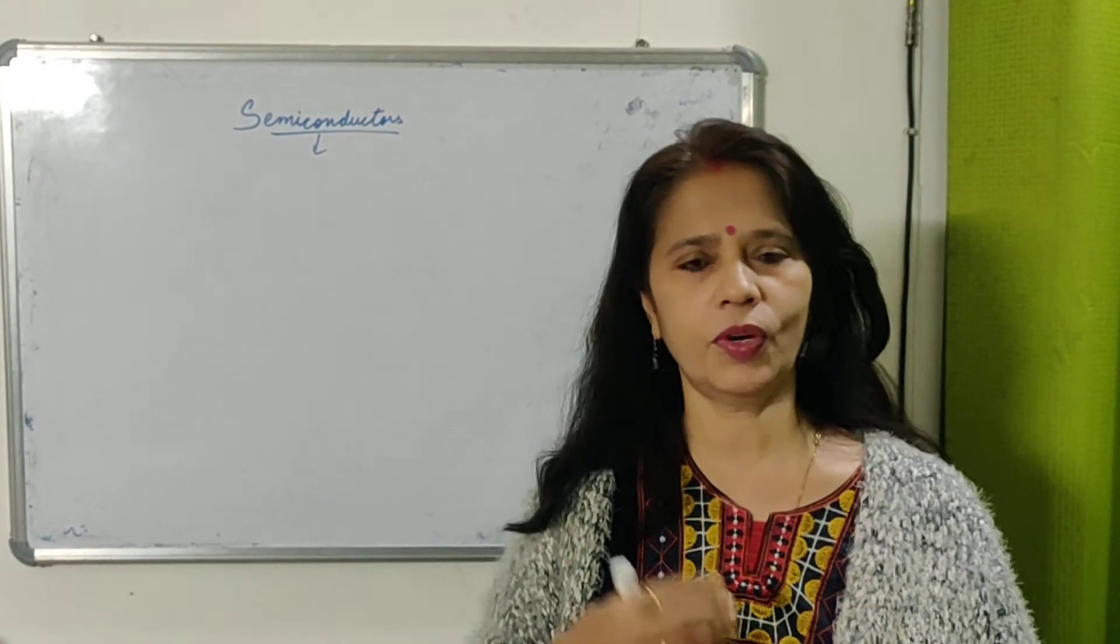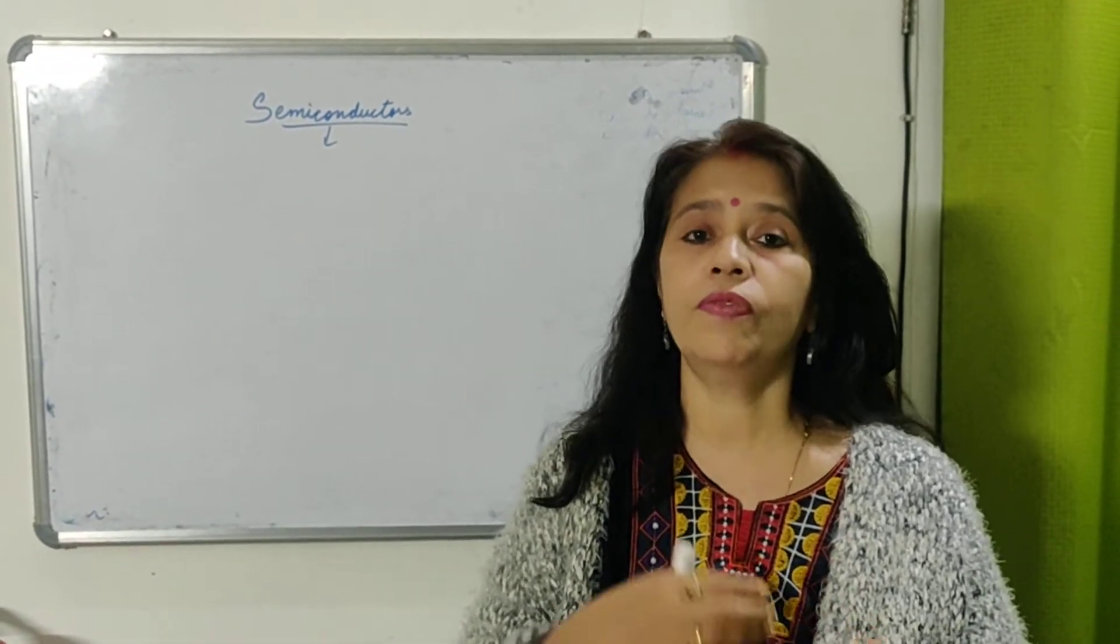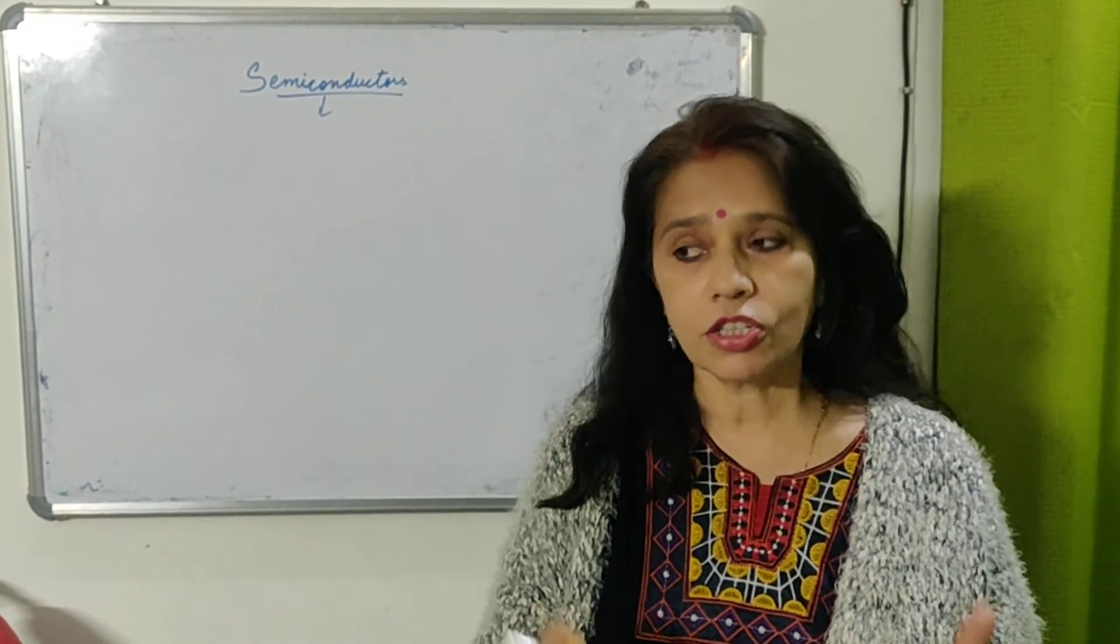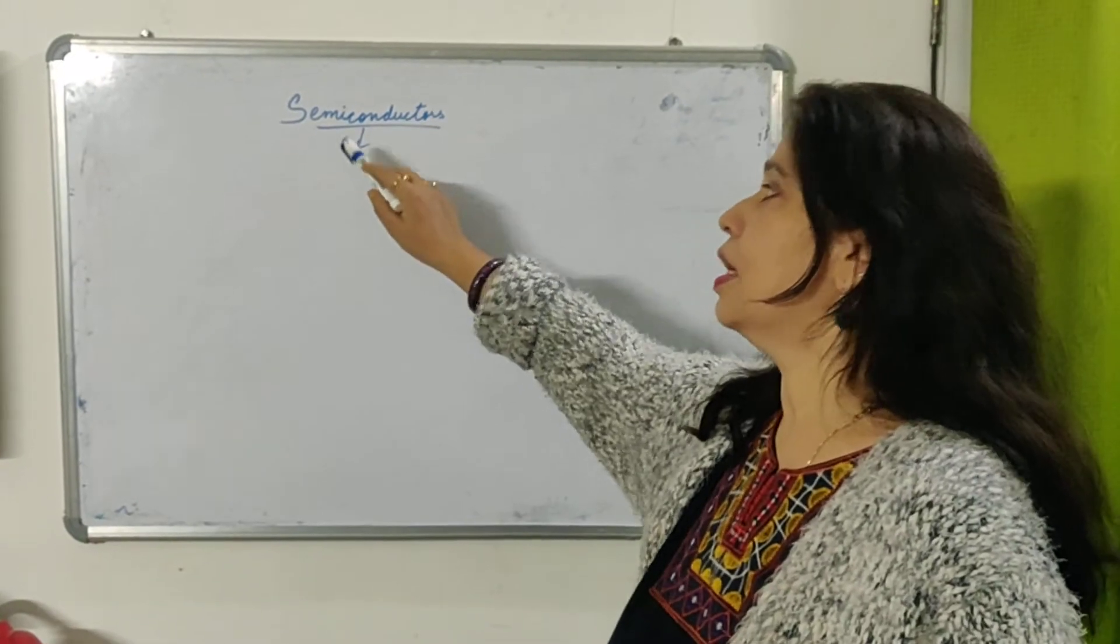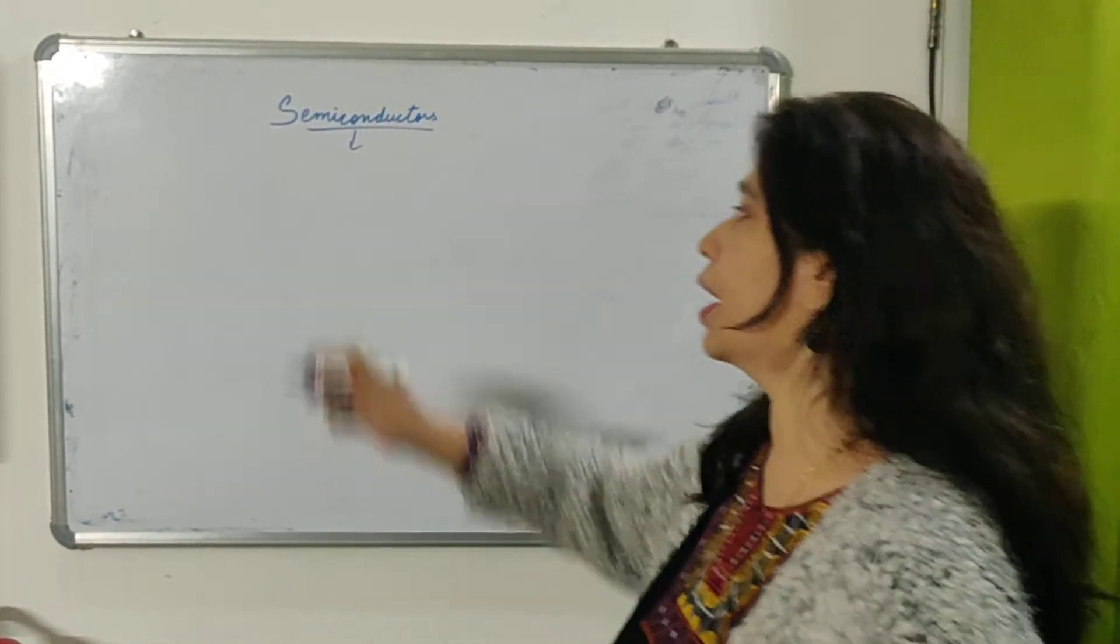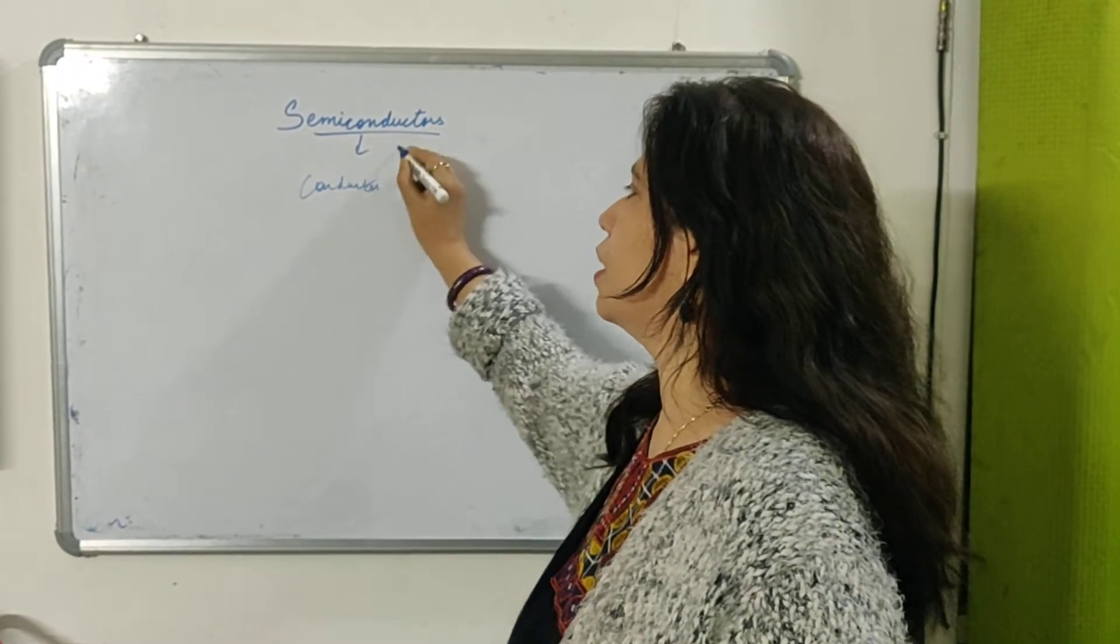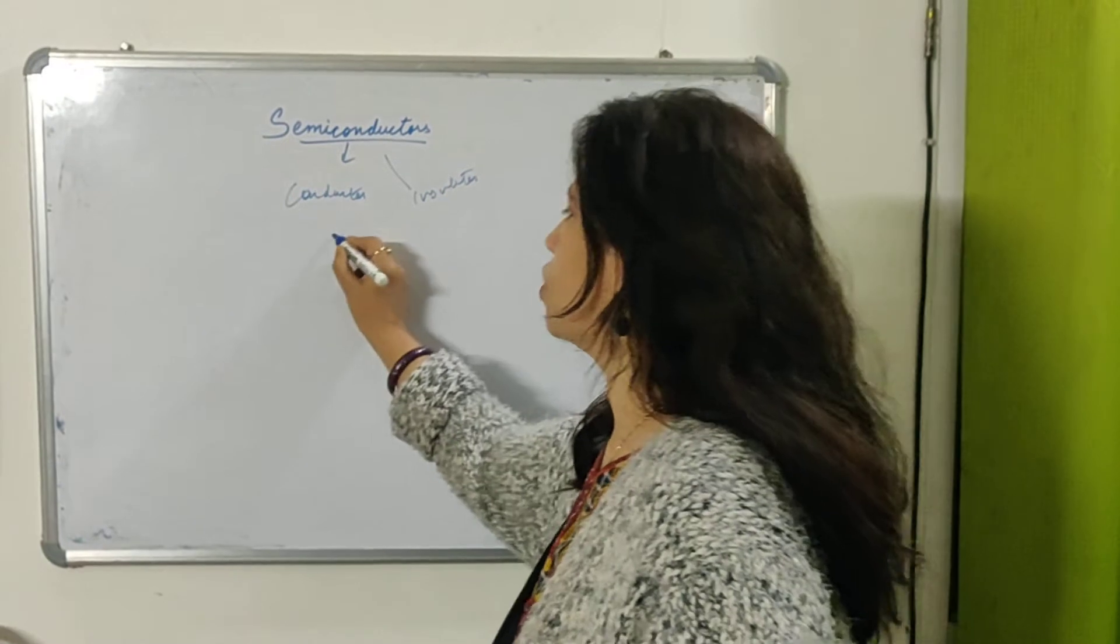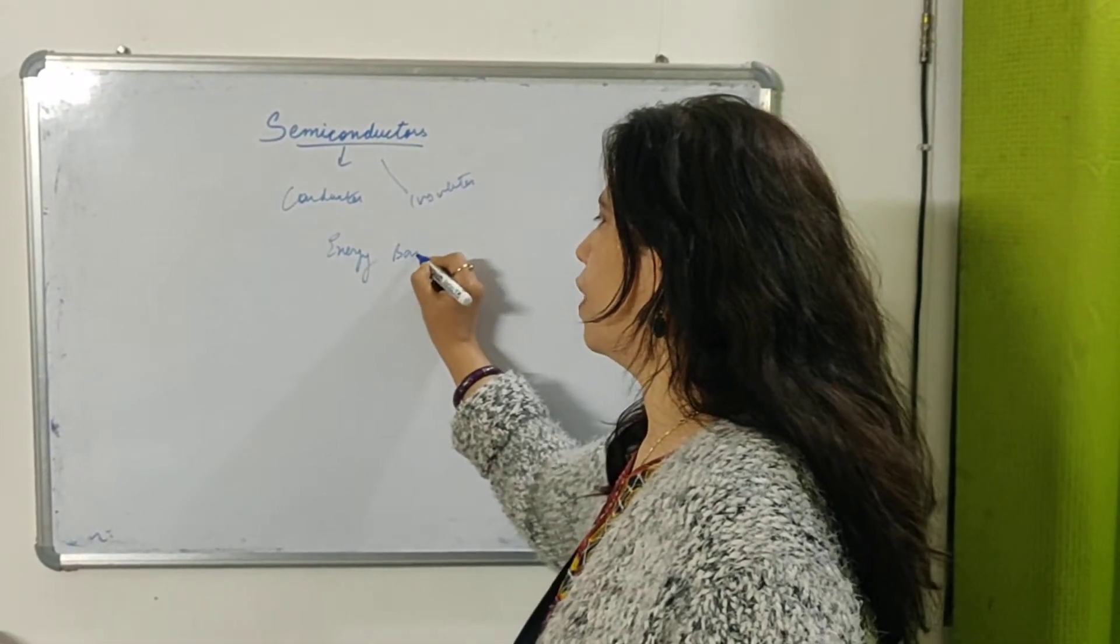And then so many questions came across me, ma'am, then how can it behave like both? When does it behave like a conductor and when like an insulator? So I thought of explaining them, semiconductors, how they behave like conductor and how they behave like an insulator on the basis of energy band diagram.